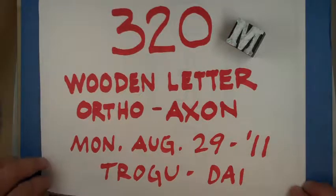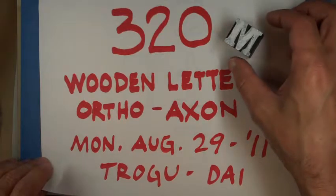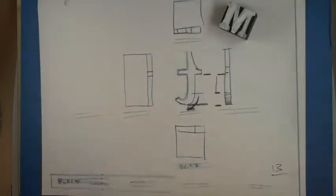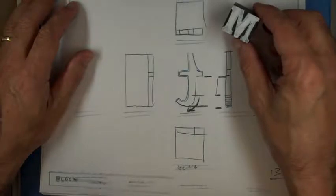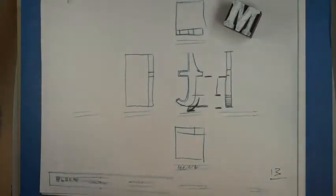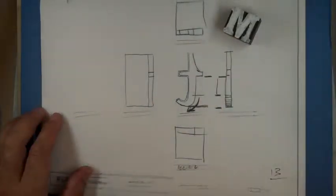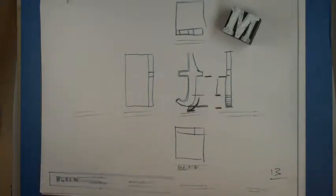Okay, so today is Monday, August 29, 2011, and this is the orthographic and the axonometric of wooden letter. So what we'll do is you'll each get a letter and I think the assignments now call for two different letters for the orthographic and the axonometric. Maybe we'll just stick to one letter and you are to draw it in orthographic like in the mill carton and in axonometric.